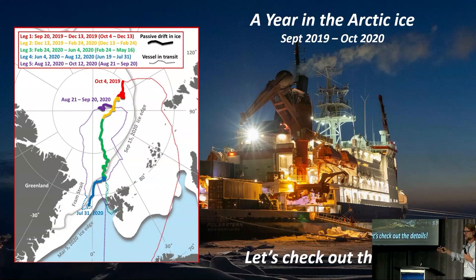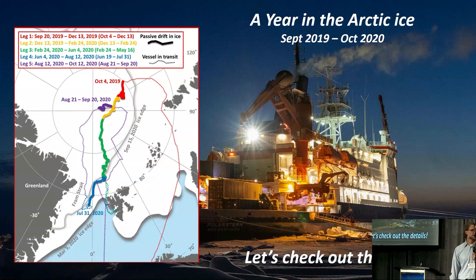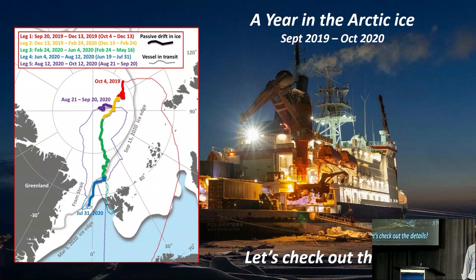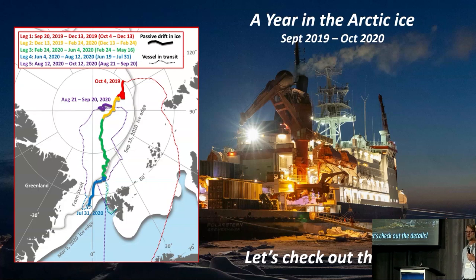Our year in the Arctic sea ice — the expedition ran from late 2019 until late 2020, a full year. We took the Polarstern icebreaker, a fantastic research icebreaker from the Alfred Wegener Institute in Germany. We took it out into the Arctic sea ice, drove it into the ice, found a parking spot, turned off the engines, and passively drifted with the ice across the central Arctic on the transpolar drift over the course of a year.